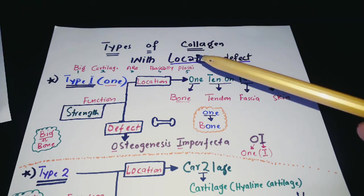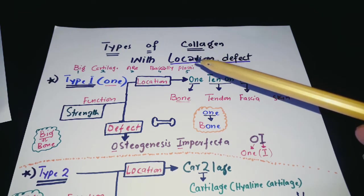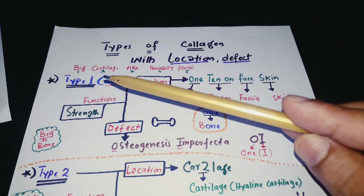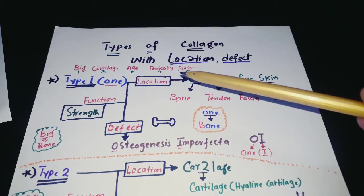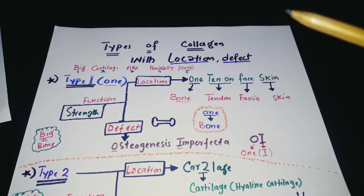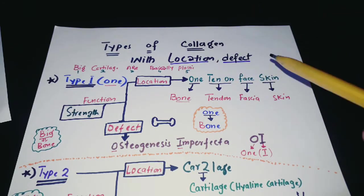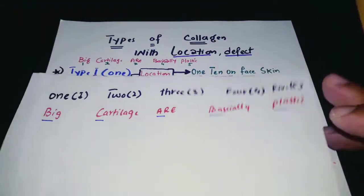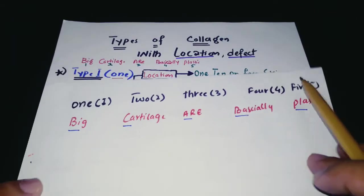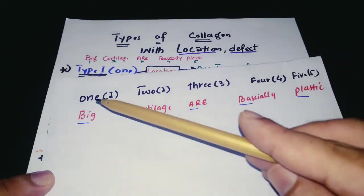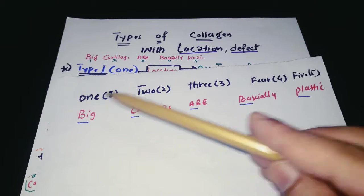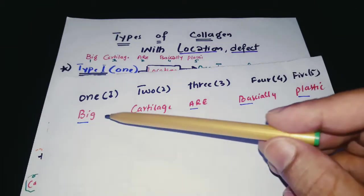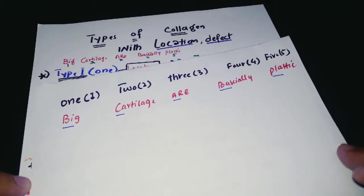I will be explaining collagen types using two mnemonics. The first mnemonic is 'Big Cartilage Are Basically Plastic.' As you can see, we have the first, second, third, fourth, and fifth cartilage types, and this mnemonic will help us remember each one.